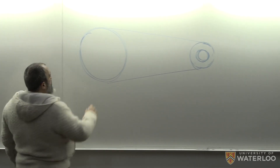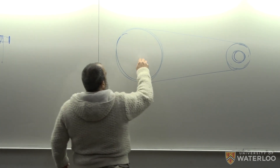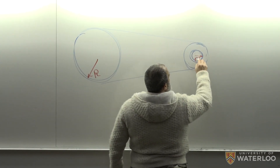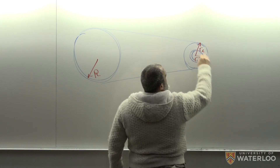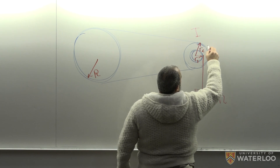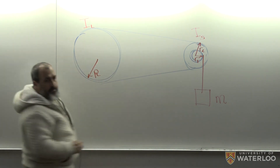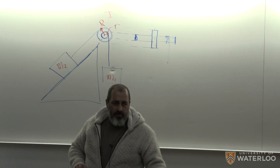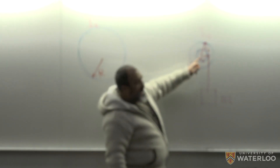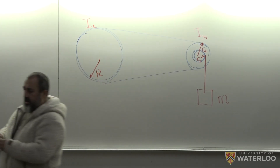This second problem: you have a pulley of radius big R, and this one will have R1 and R2, and you have a mass M hanging from here. This guy has I small and this is I large. This is an interesting problem in that this mass is going to pull this pulley, and this pulley is going to pull that pulley with a belt or rope around it.